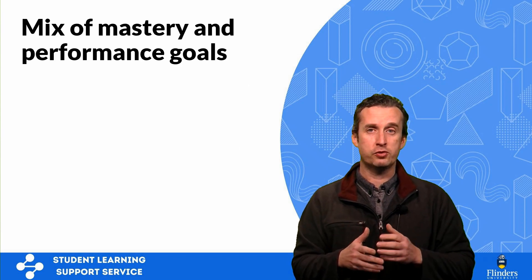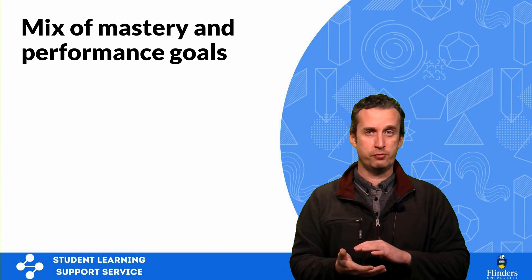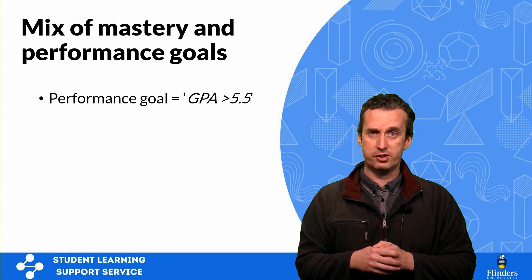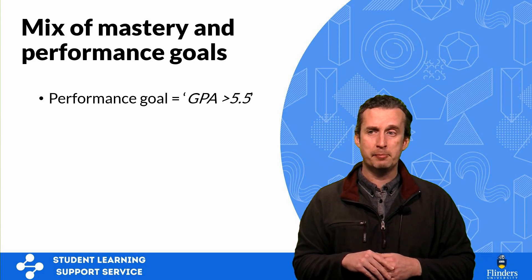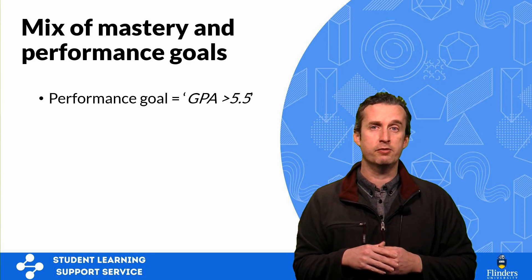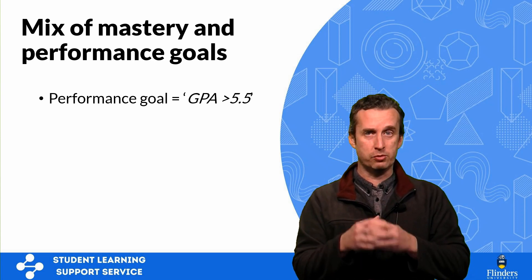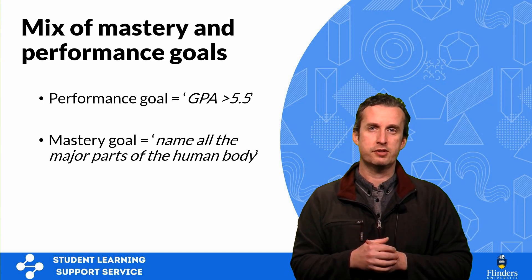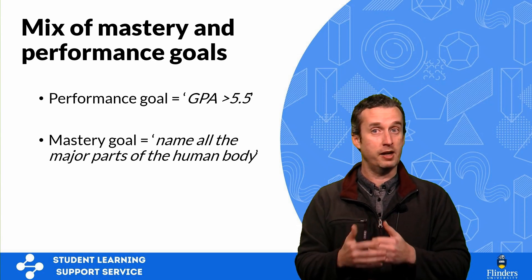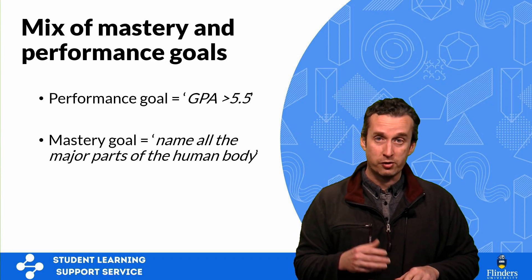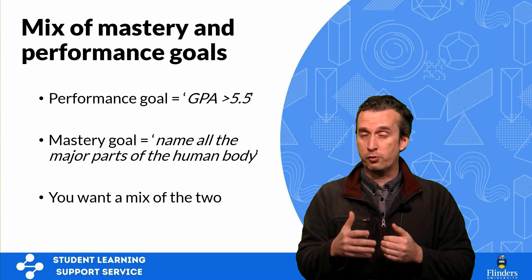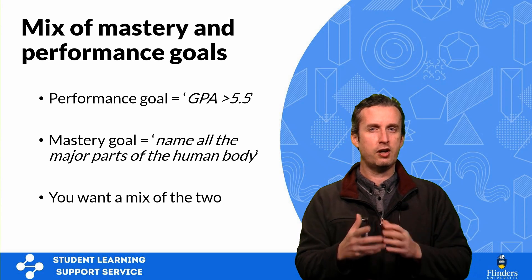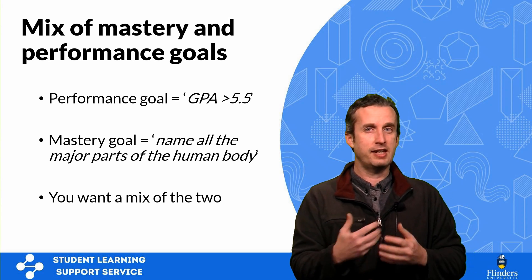Characteristic six is that we should have a mix of mastery and performance goals. Performance goals outline the performance level you want to achieve — for example, by the end of semester I'd like my GPA to be above 5.5. A mastery goal is more about what you actually want to learn — for example, I want to be able to name all the major parts of the human body. You want a mix of both. Performance goals are good, but if you only set performance goals, you lose sight of the fact that you came to university to learn things, not just get a particular grade.